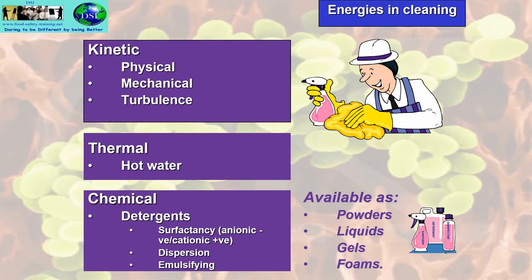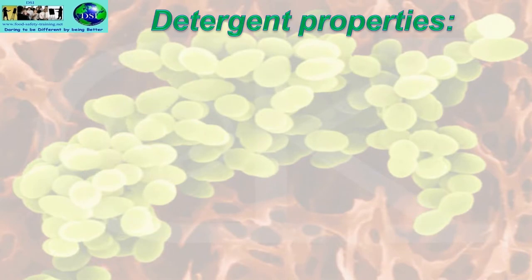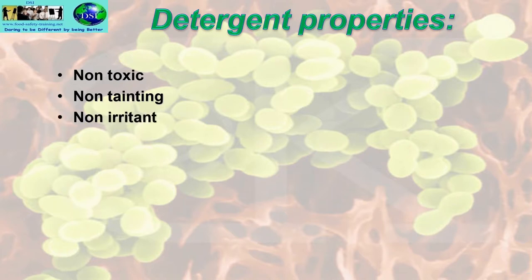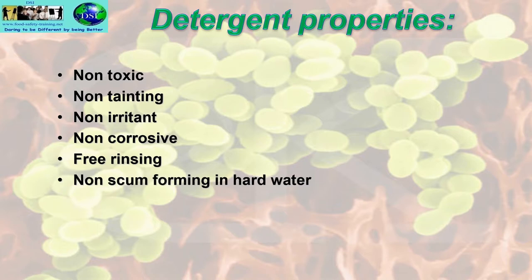For more information on surfactancy — about anionic (negative) and cationic (positive), and the dispersive and emulsifying factors — check out the notes that come with the course. Detergent properties: what we look for when employing a detergent — it must be non-toxic, non-tainting, non-irritant, non-corrosive, free rinsing, non-scum-forming in hard water, and soluble in water.